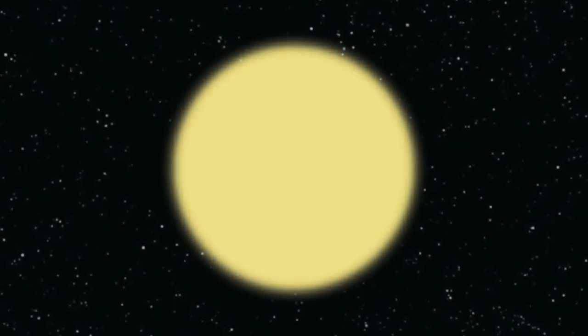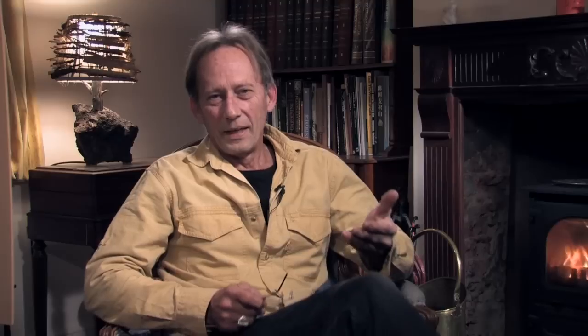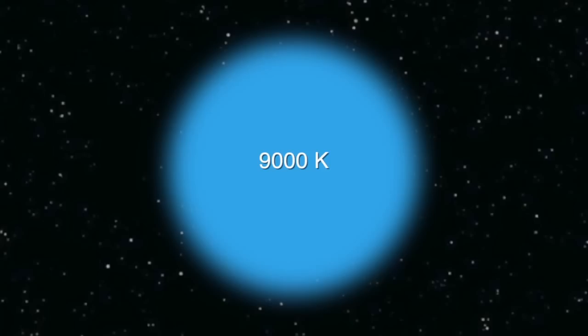Heat it up a bit more to 4500 to 5000 degrees and you're getting into the color emitted by fluorescent lighting. Heat it up to 5500 degrees and you get what's called daylight — the standard the film industry set years ago. Daylight film in the old days was balanced for 5500K, and the electronic settings on your camera for exterior or daylight is 5500K. Heat it up to 7000 degrees and you've got the light of an overcast day. On a clear day, in the shade of a building where you're only lit by the blue sky, your color temperature is 9000 degrees.